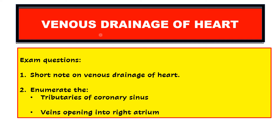The topic of this video is venous drainage of heart. This is an important topic from the thoracic region; in exams a short note is often asked on venous drainage of heart, or you get a long question on blood supply of heart, in which case you have to mention both the arterial supply as well as the venous drainage. You can also be asked to enumerate the tributaries of the coronary sinus and the veins that open into the right atrium.